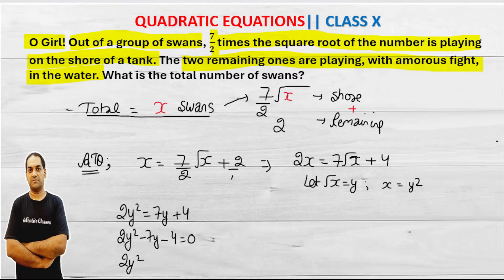From here the factor you'll get is 2y squared. Now you know 8, 8 is 8 into 1, so minus 8y plus y minus 4 equals 0.